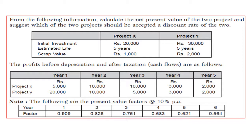We have further been provided with the discounting factors at the rate of 10% for years 1 through 6, and the present value factors have also been provided.